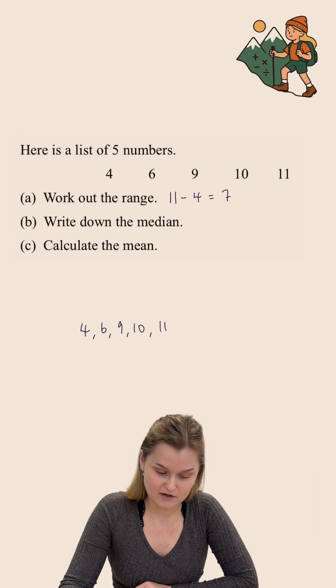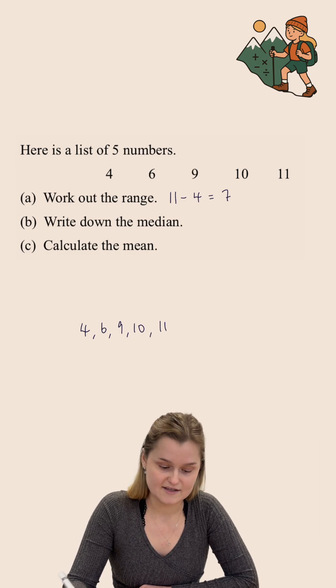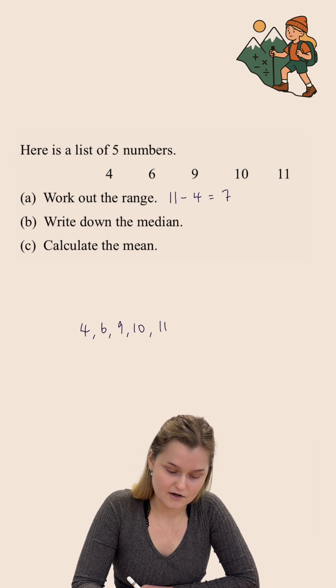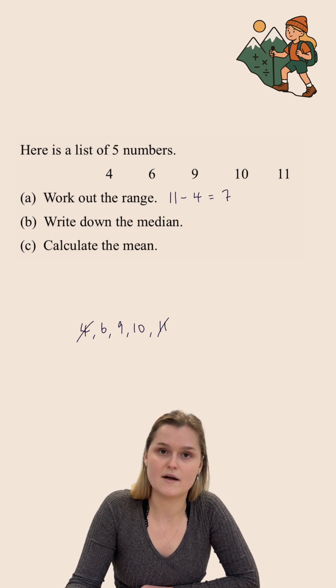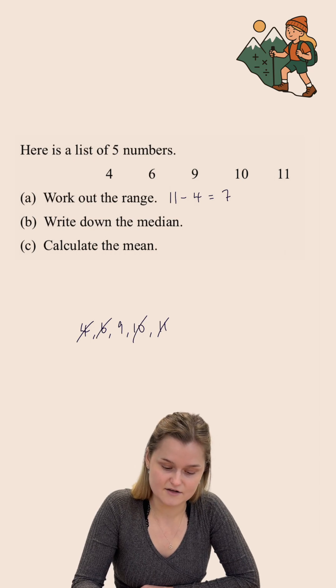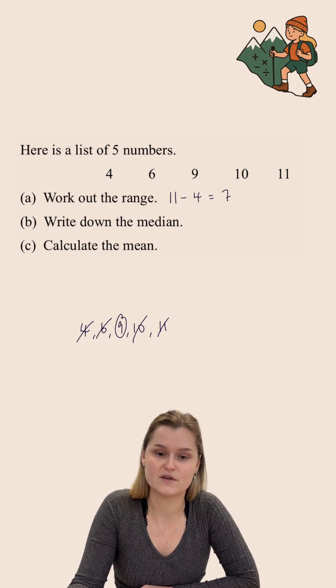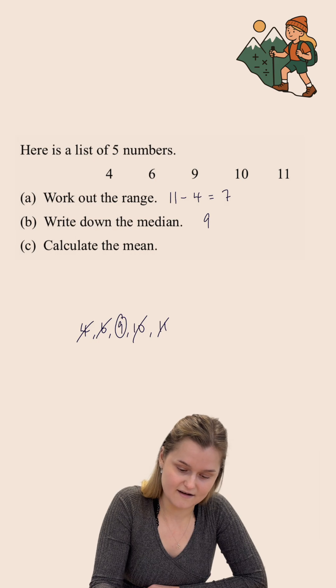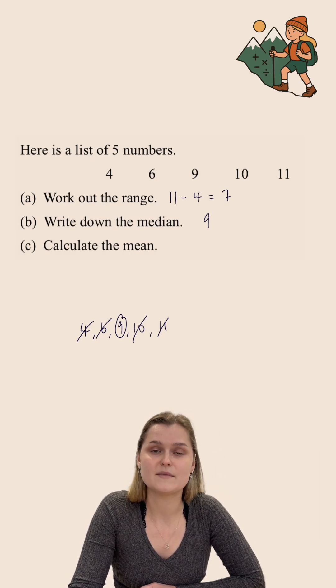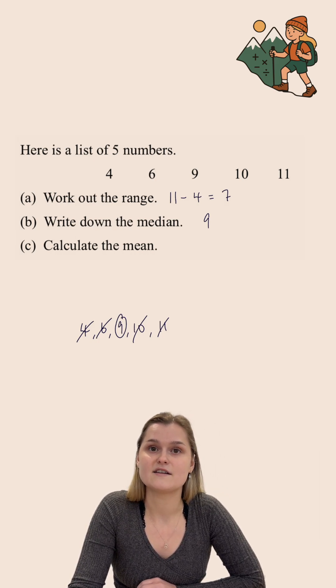The easiest way to do this when you've only got five numbers is to cross them off in pairs. So I'm going to cross off the smallest and the largest number, the next smallest and the next largest, until I'm left with one number in the middle, which in this case is 9. If you are left with two numbers in the middle, you add them together and divide by 2.